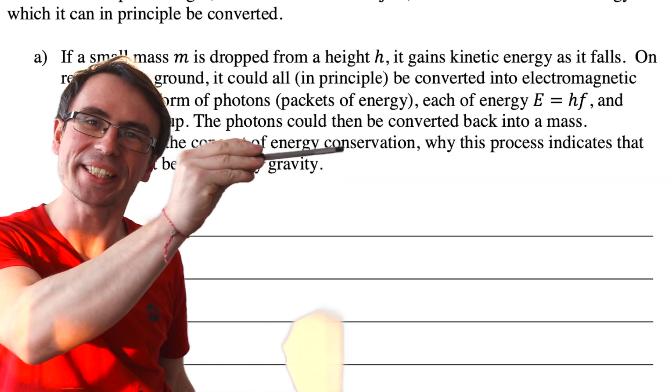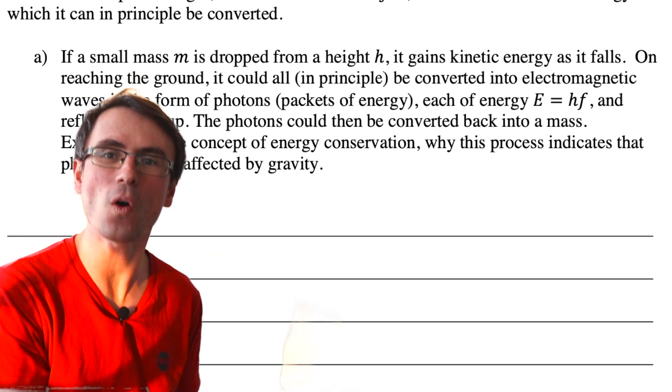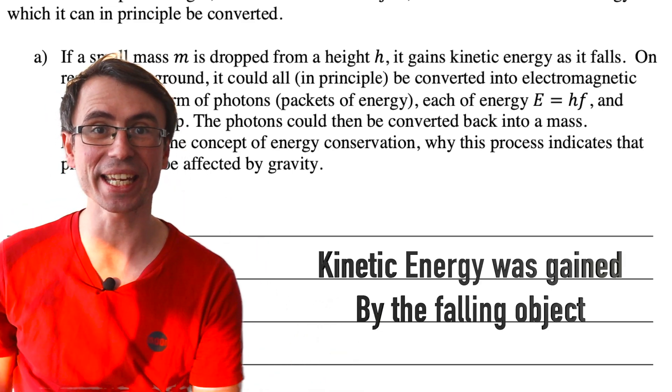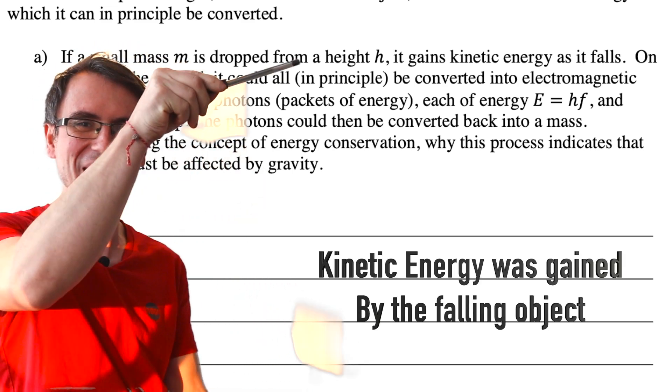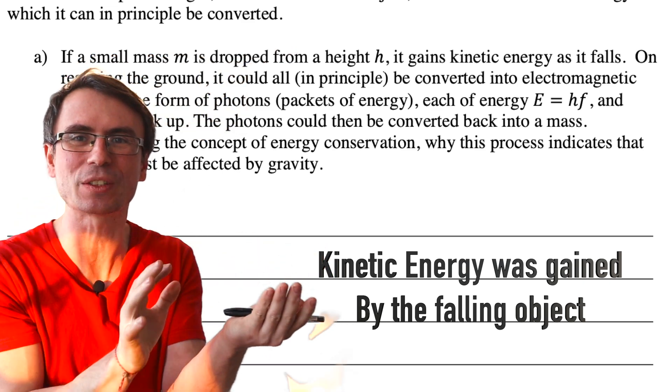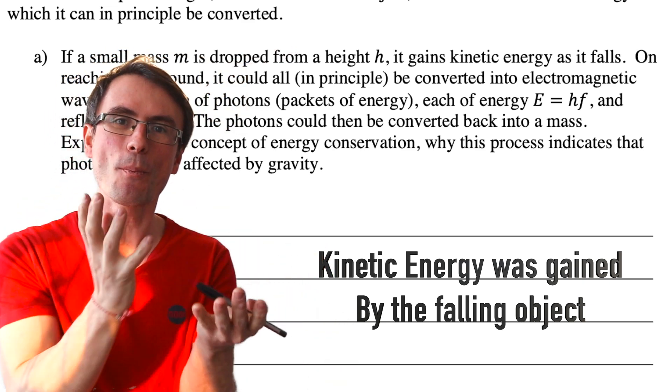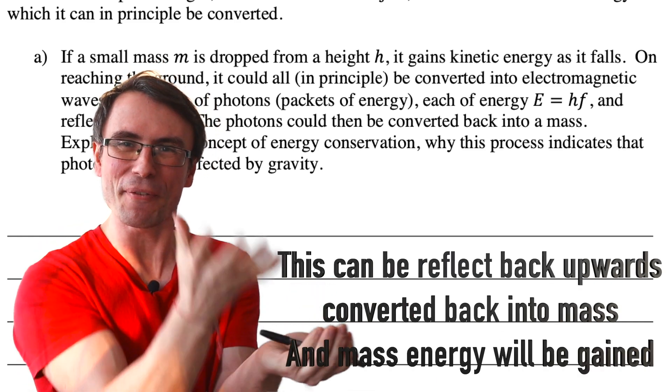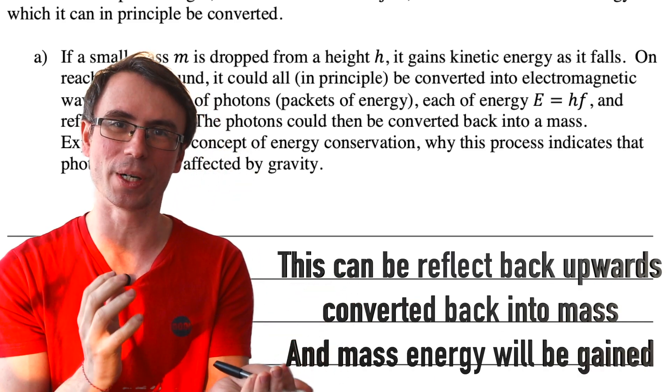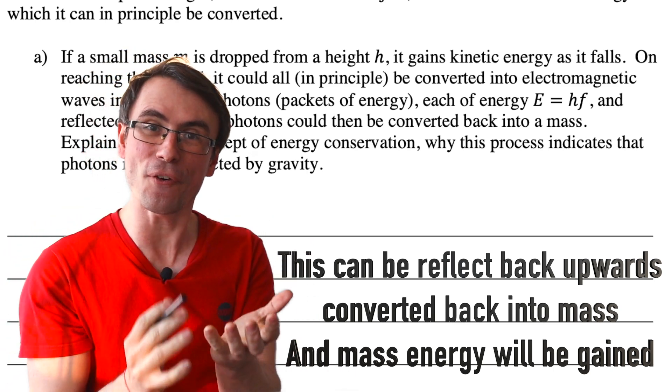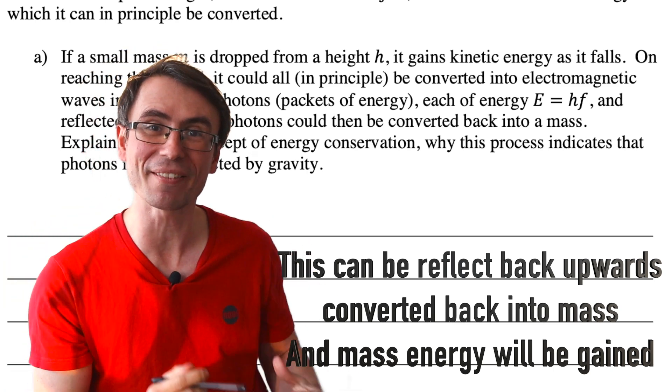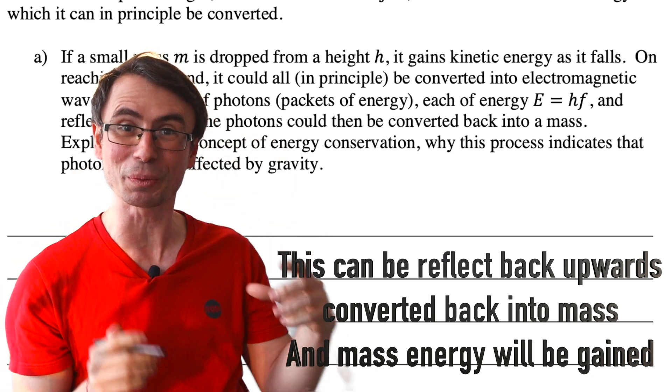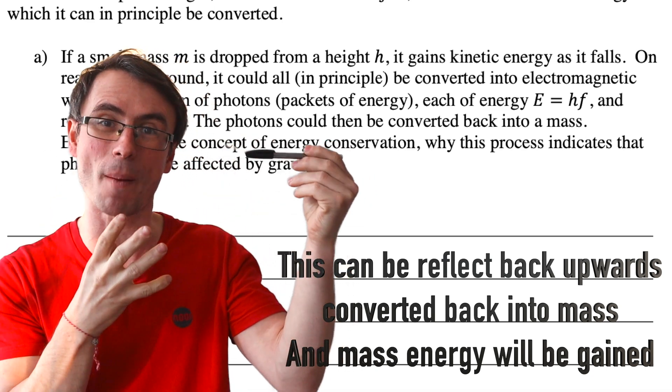So as our light object is falling, it's gaining kinetic energy, so that means the moment before it hits the ground it will have gained more energy than it started off with. All this energy could then be reflected back upwards, and if the photons were not affected by gravity, we could end up with more energy than we started off with at the top.